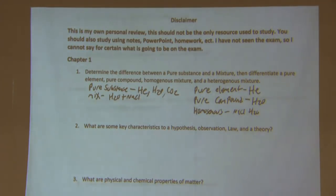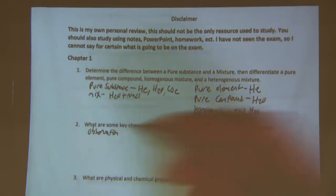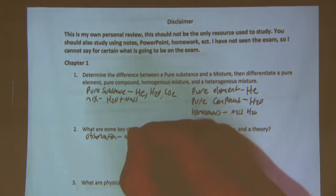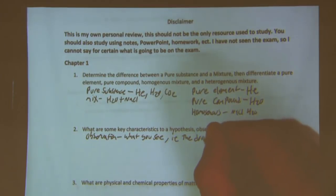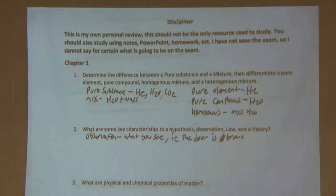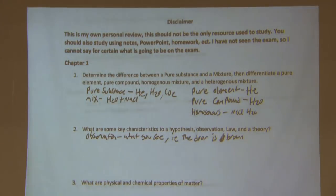What are some key characteristics of a hypothesis, observation, law, and theory? Starting with observation — something that you see that happens. For example, the door is brown. A hypothesis would be an explanation of the observation. For example: the door is brown because it's made out of wood. The hypothesis could be correct or incorrect; you'll find out later through testing.